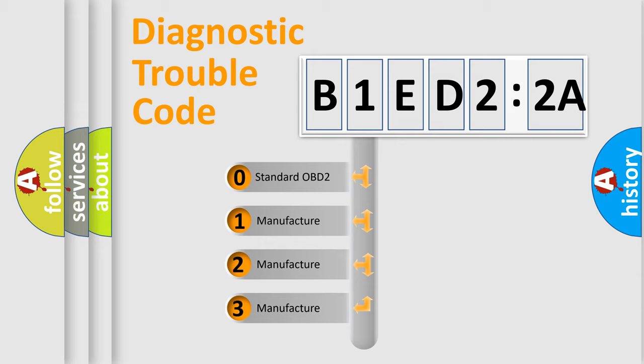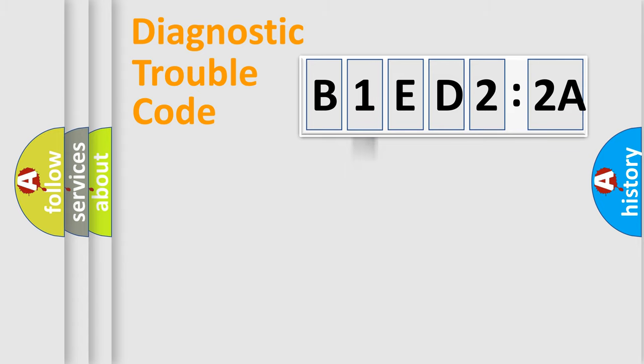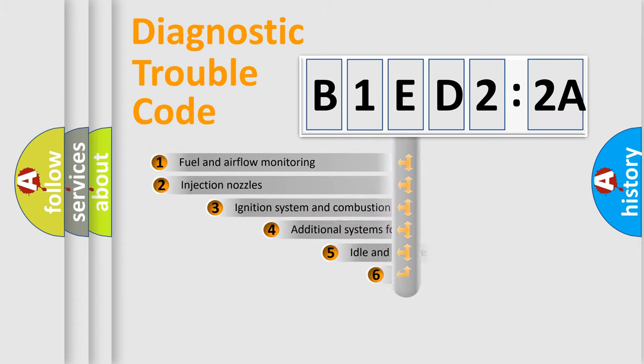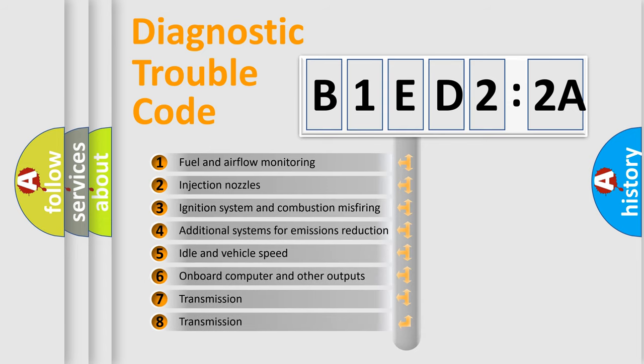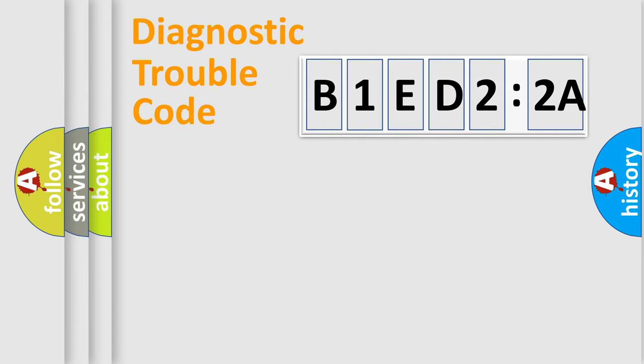If the second character is expressed as zero, it is a standardized error. In the case of numbers 1, 2, 3, it is a more prestigious expression of the car-specific error. The third character specifies a subset of errors. The distribution shown is valid only for the standardized DTC code. Only the last two characters define the specific fault of the group.